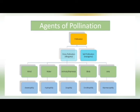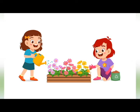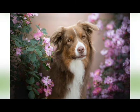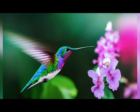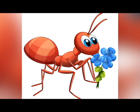Different agents carry out cross-pollination. Cross-pollination carried by mammals like humans and animals like dogs is called zoophily, and pollination by birds is called ornithophily. Pollination by ants is called myrmecophily.